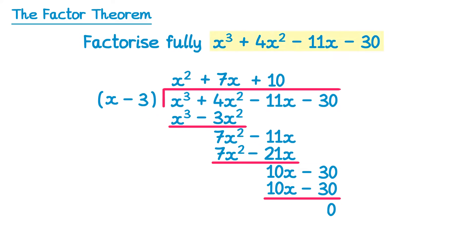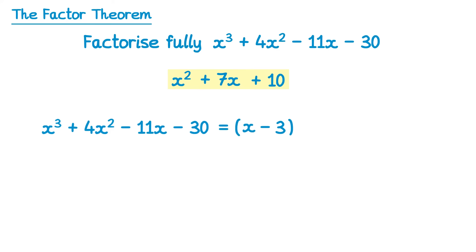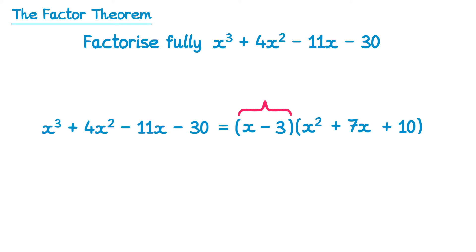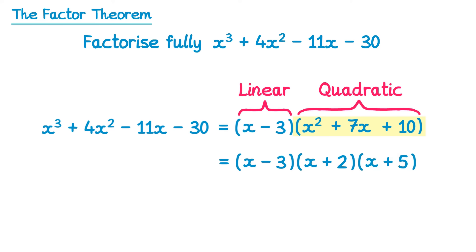Dividing the cubic by the linear term gives us a quadratic. That means the cubic equals the product of the linear term and the quadratic term. We've factorised into a linear term and a quadratic term, and this quadratic also factorises — into x plus 2 and x plus 5. So we've fully factorised the cubic using the factor theorem first and then polynomial long division.